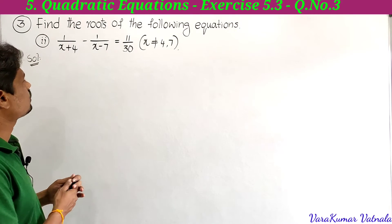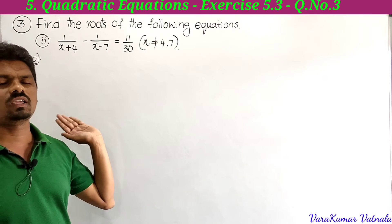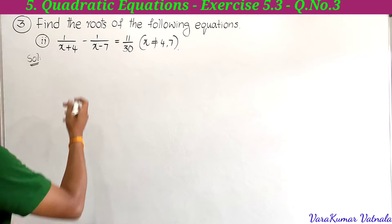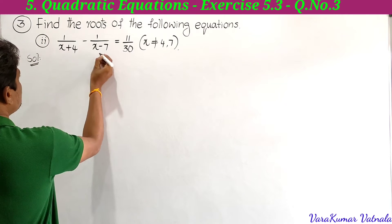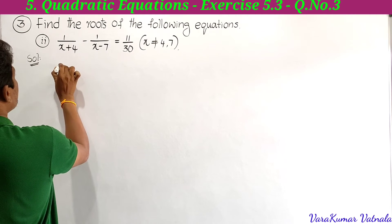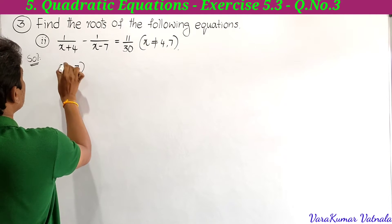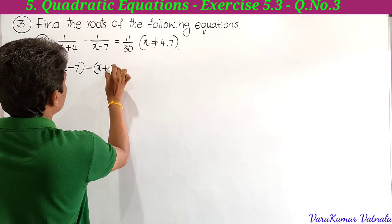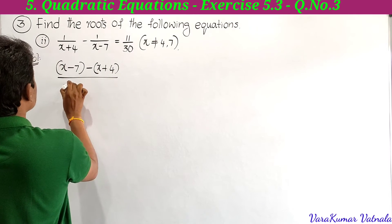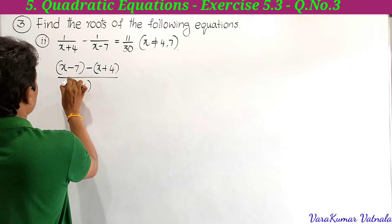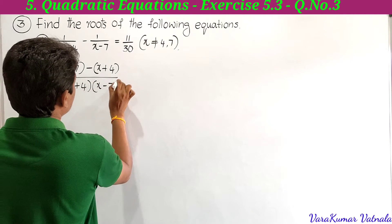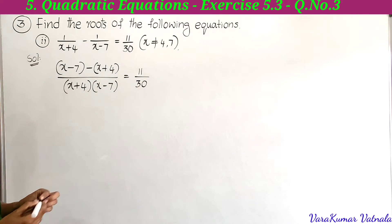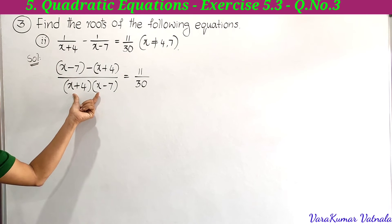Again this is not in the form of a quadratic equation, so by simplifying we can make it a quadratic equation. Finding the LCM — the LCM is x plus 4 into x minus 7. We get x minus 7 minus x plus 4, all divided by x plus 4 into x minus 7, equal to 11 by 30.